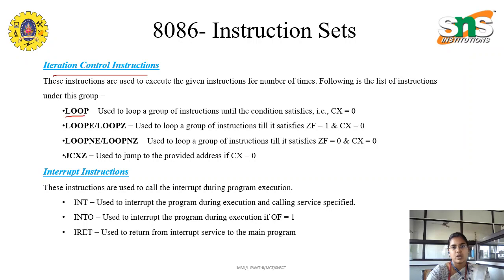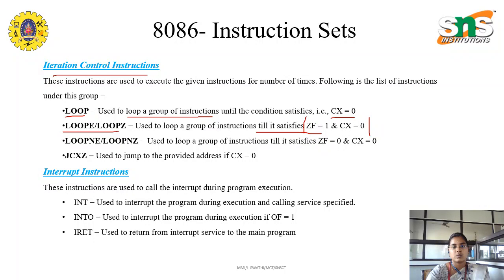For example, first is LOOP — we use it to loop a group of instructions until the condition satisfies, that is CX is equal to 0. Next is LOOPZ or LOOPE — we loop a group of instructions until the condition satisfies, that is when Z flag is equal to 1 and CX is equal to 0.